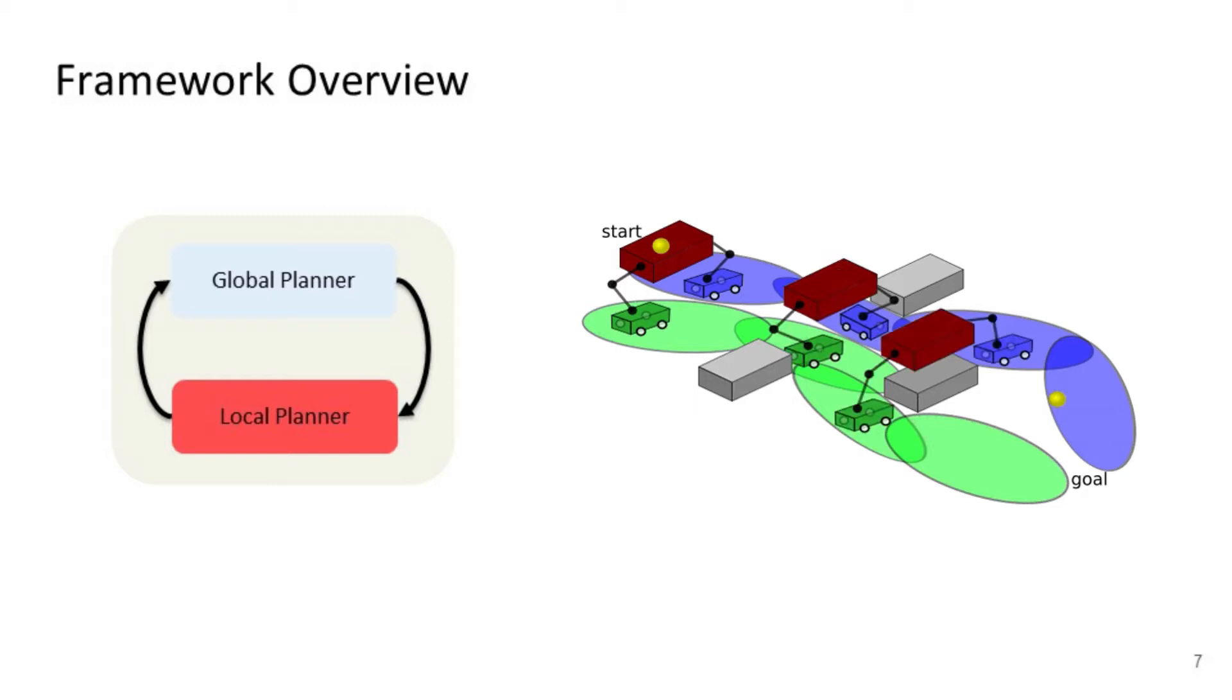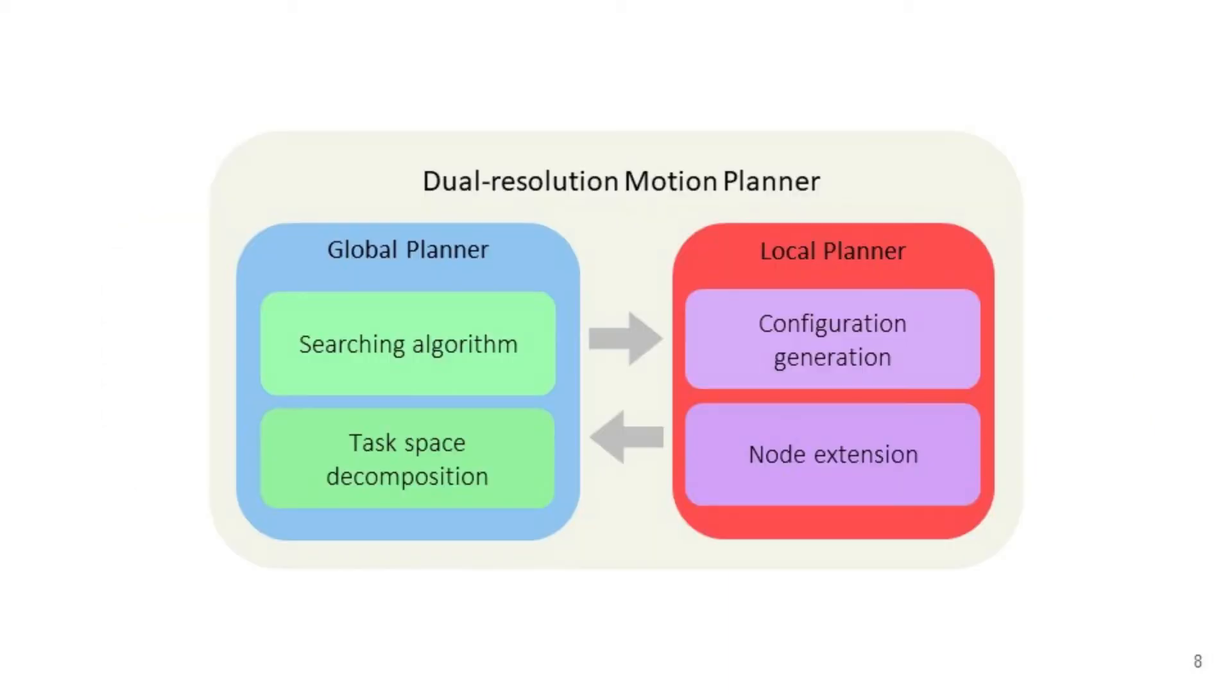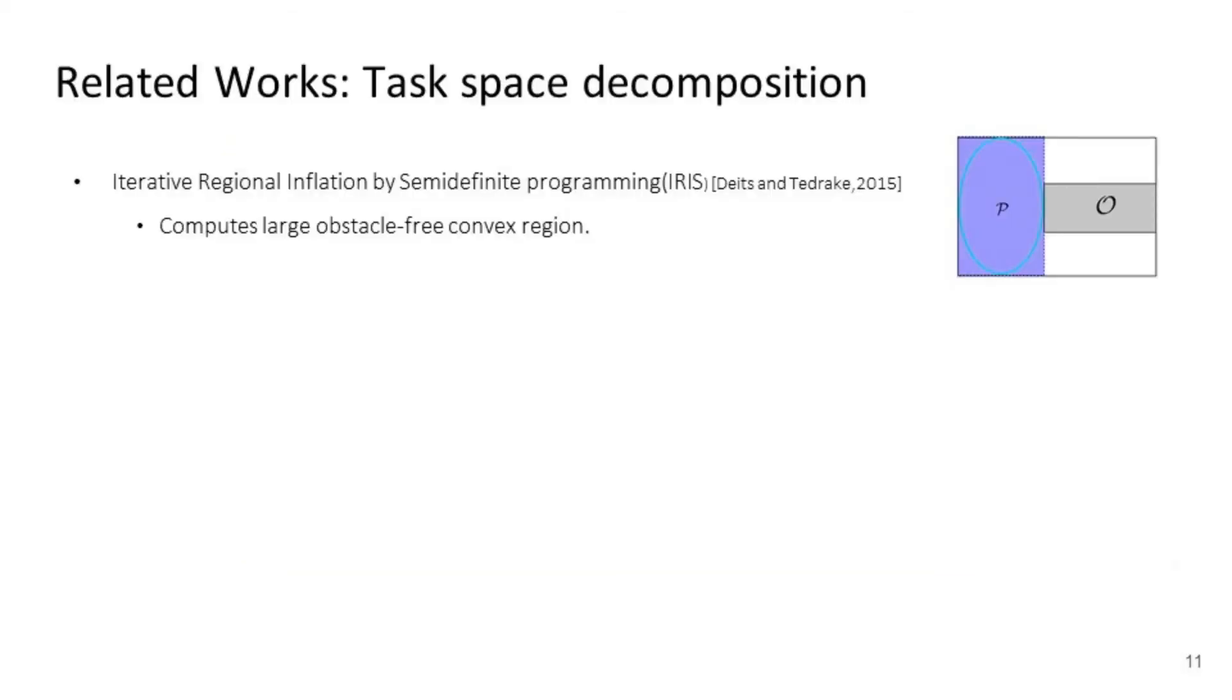while another local planner completes the task by computing a path in high-dimensional constrained configuration space. Although our framework is not limited to specific searching algorithms, we use RRT as our searching algorithm, which searches in decomposed task regions generated by task space decomposition. Our task space decomposition relies on the IRIS algorithm to compute large obstacle-free convex regions, which is work from Deits and Tedrake in 2015.